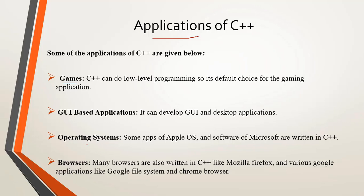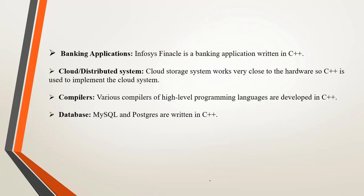The third important application of C++ is operating systems. Various operating systems have been developed in C++, like Apple OS, and various Microsoft software are also written in C++, such as Microsoft Office and Visual Studio. The fourth important application is browsers — various browsers like Mozilla and Google apps such as Google File System and the Chrome browser are also written in C++. Fifth, C++ is used for banking applications because it supports multi-threading, making it a good choice; for example, Infosys Finacle is a banking application written in C++.